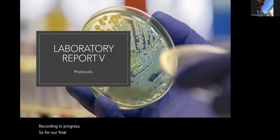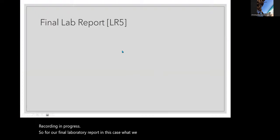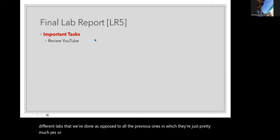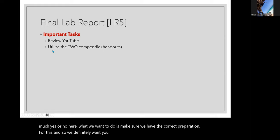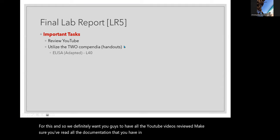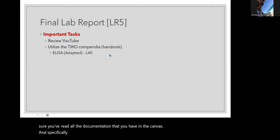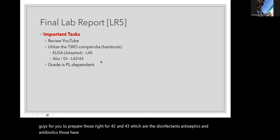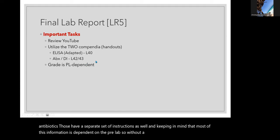For our final laboratory report, we have a collection of different labs as opposed to all previous ones which were pretty much yes or no. What we want to do is make sure we have the correct preparation. You definitely want to have all the YouTube videos reviewed and read all the documentation on Canvas. Specifically for the ELISA, we have a handout and a couple of videos ready for labs 42 and 43, which are disinfectants, antiseptics, and antibiotics — those have a separate set of instructions. Keep in mind that most of this information is dependent on the pre-lab, so without a pre-lab you don't get any credit.